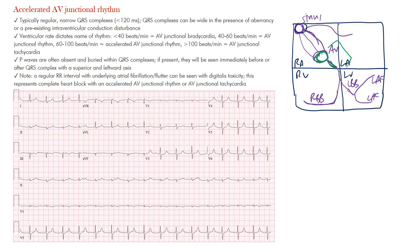The normal intrinsic rate of the sinus node is between 60 and 100 beats per minute. The AV junctional region's intrinsic rate is between 40 and 60 beats per minute, and the ventricles fire between 20 and 40 beats per minute. For example, if the sinus node is firing at 65 bpm — perhaps in a healthy young athlete or someone with slow sinus node function, or on beta blockers — that's a slow sinus rhythm.